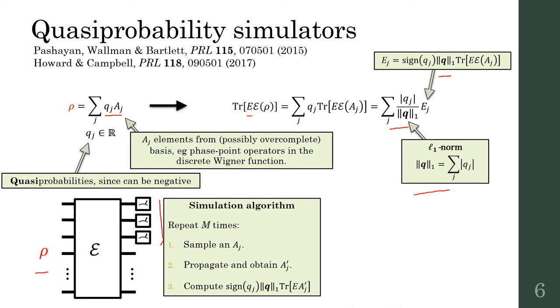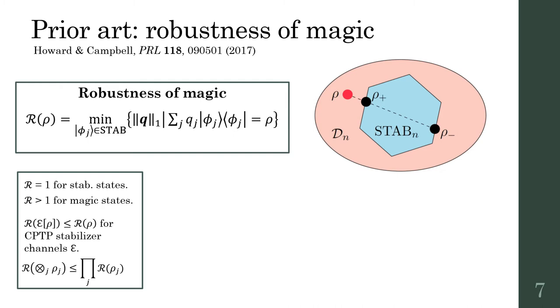This leads to a simulation algorithm where we repeatedly sample one of the basis elements, propagate it through the circuit, and compute the expected value at the output. This gives an unbiased estimator for the quantum mean value. Computing each sample is efficient, but we need many samples to converge to the true value. To achieve fixed additive error ε, the number of samples needed scales with the L1 norm squared.